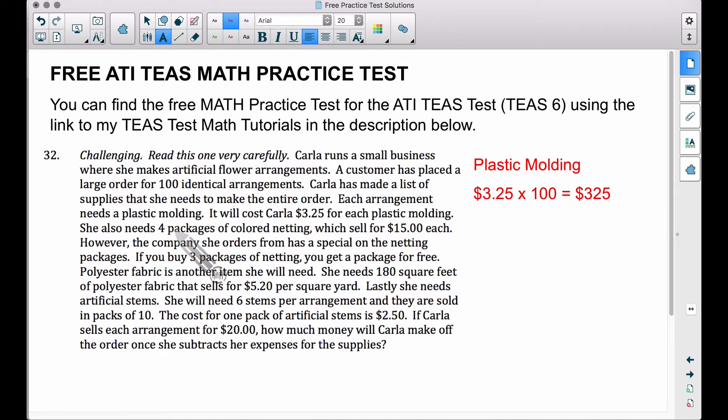Perfect. She needs four. So we're not going to take four times 15 though, because she's going to buy three. She's going to pay for three and she'll get that fourth package for free. Therefore, she's going to spend $45 on the colored netting. $15 per package times three packages. Even though she needs four, she's going to buy three of them and get the fourth one for free.